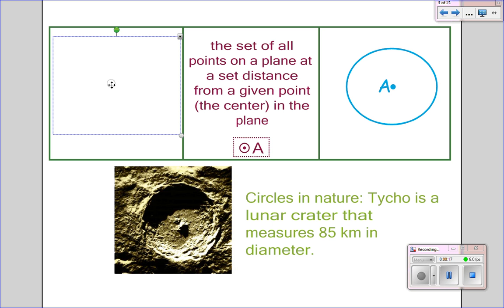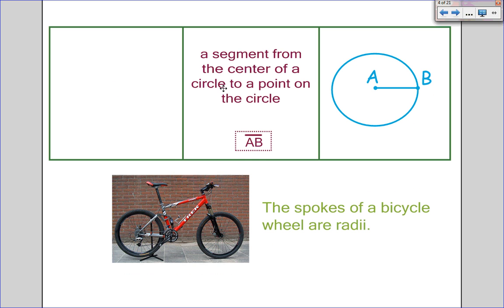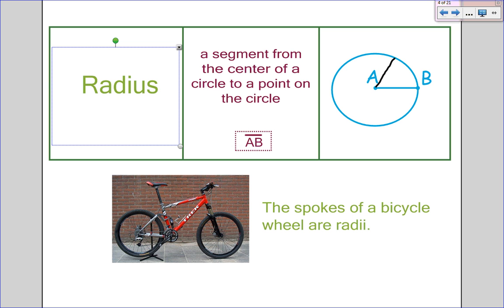First off, we have a circle. The definition of a circle is a set of all points on a plane at a set distance from a given point in the plane. So if I start here as my center, every point that's equidistant would make this circle. Next, we have our radius, which is a segment from the center of a circle to a point on the circle. All radii on the circle are going to be congruent no matter where you draw them — so if this was 7, this would be 7, 7, and 7.